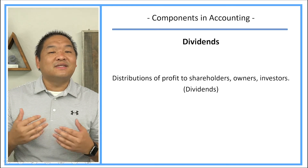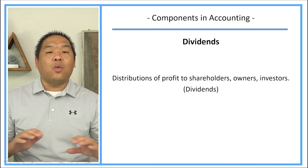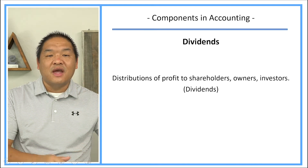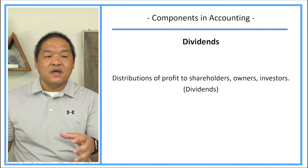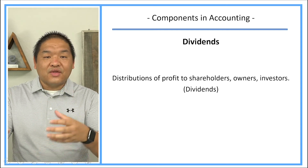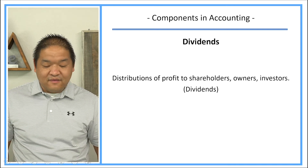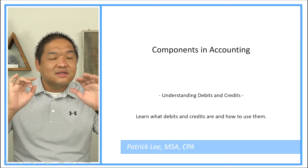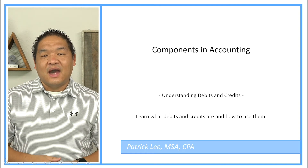The reason dividends are not an expense is that they don't have to be paid. There are very profitable companies that pay no dividends whatsoever, because they believe they can reinvest the money and get a better return than if they gave it to shareholders. That reinvestment logic will hopefully grow the shareholders' worth of the company's stock. So dividends are a distribution of profits to shareholders, owners, or investors — and that is a look at the six components in accounting.